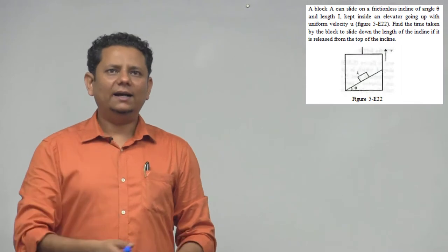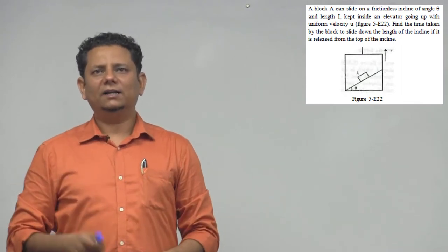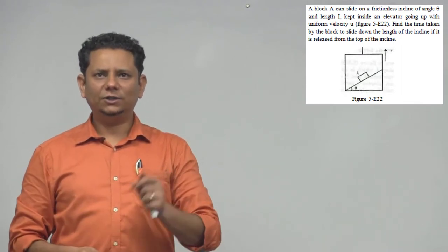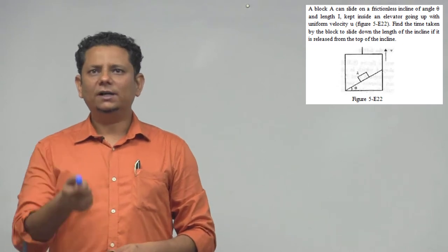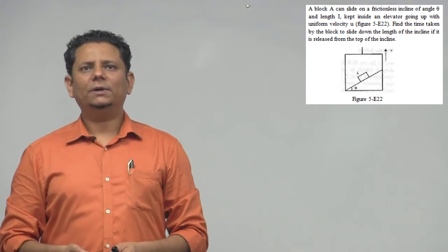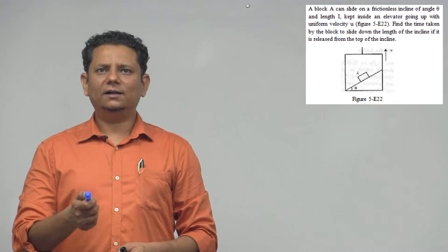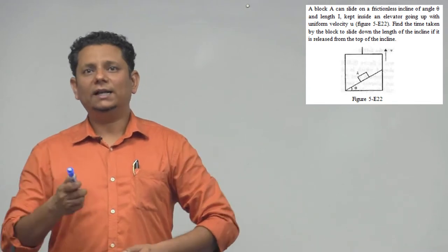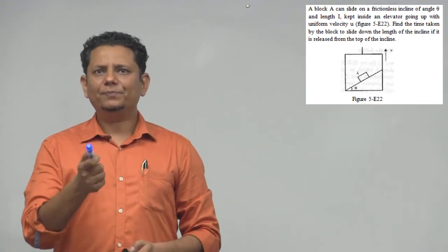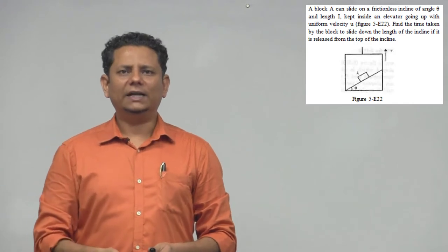Next question. A block A can slide on a frictionless incline of angle theta and length L kept inside an elevator going up with uniform velocity U as shown in the figure. Find the time taken by the block to slide down the length of the incline if it is released from the top.